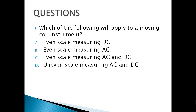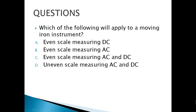Which of the following applies to a moving coil instrument? These questions have been included in previous board exams. A moving coil instrument (PMMC) has an even scale measuring DC only. A moving coil rectifier instrument already has a rectifier, so it has an even scale measuring AC. A moving iron instrument has an uneven scale measuring both AC and DC.